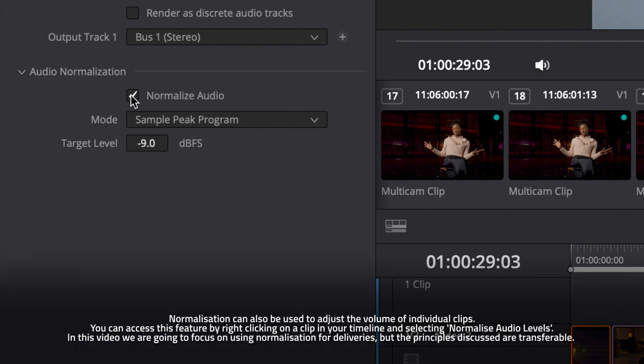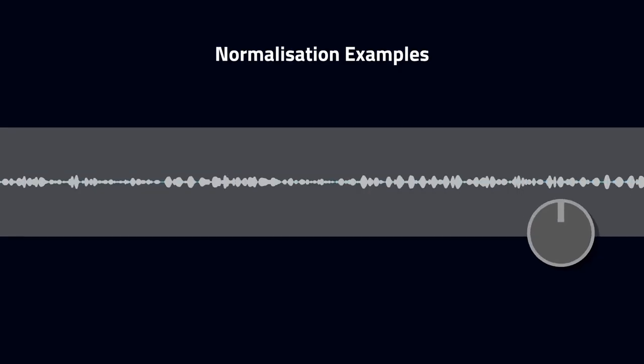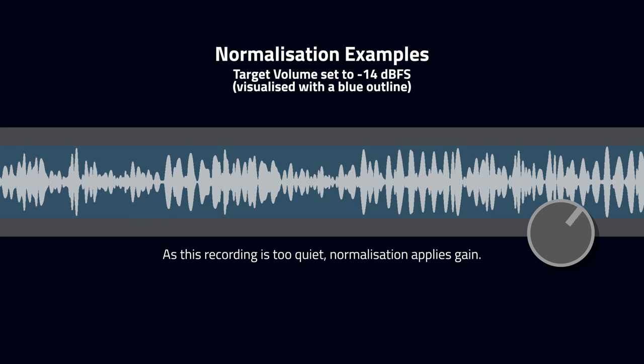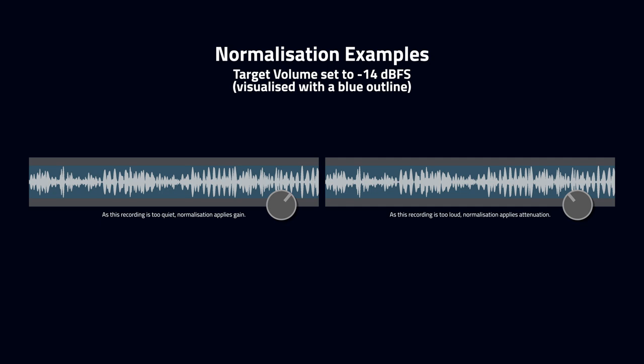Now that we know where to find the tool, let's talk about how it works. Audio normalization is the process of applying gain or attenuation to an audio recording to adjust its volume to a target or normal level. For example, if the target volume is set to negative 14 dBFS, a super quiet recording would have its volume increased until the loudest sound measures negative 14, and a super loud recording would be decreased to that same level.